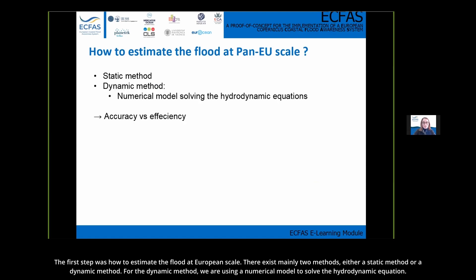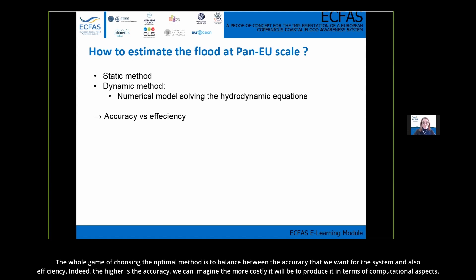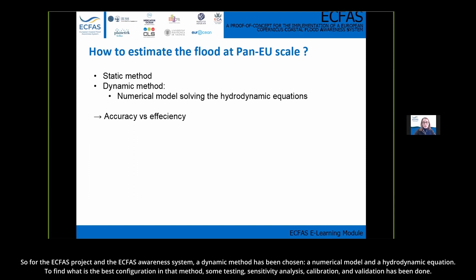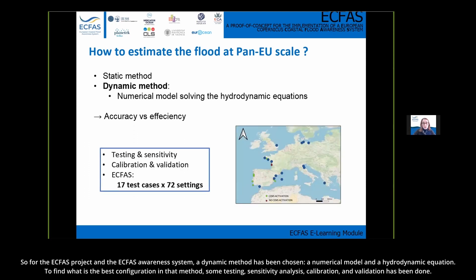The first step was how to estimate flooding at European scale. There exist mainly two methods: either a static method or a dynamic method. For the dynamic method, numerical models are used to solve hydrodynamic equations. The key challenge is balancing accuracy with efficiency — the higher the accuracy, the more computationally costly it will be. For the ECFAS project, a dynamic method was chosen using a numerical model solving hydrodynamic equations, and testing, sensitivity analysis, and calibration and validation were performed.